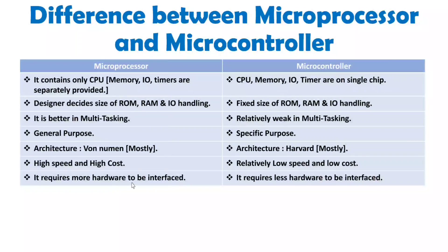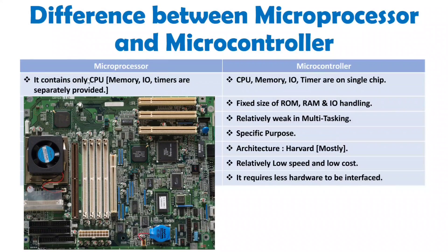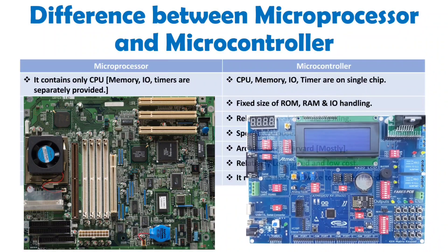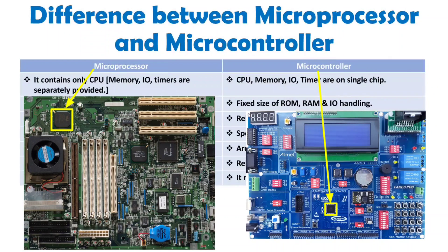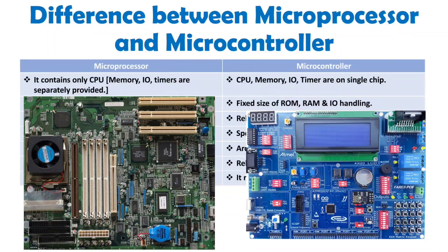A microprocessor requires more hardware to be interfaced with it since it is a single chip that does not include memory, IO, or timers — all those things need to be interfaced externally. With a microcontroller, since it has the CPU, memory, IO, and timer on a single chip, there is less requirement for interfacing hardware. For example, an AVR microcontroller board is compact, while a microprocessor board is very large, as shown in the graphics here.